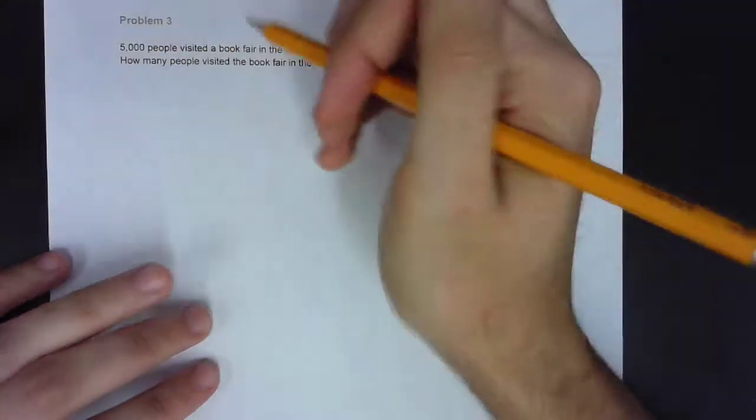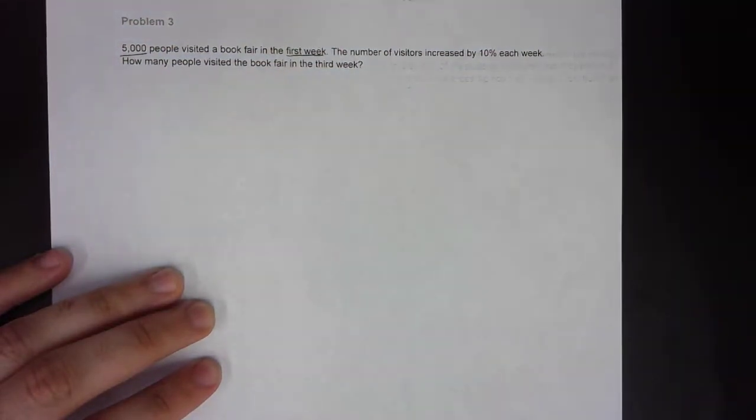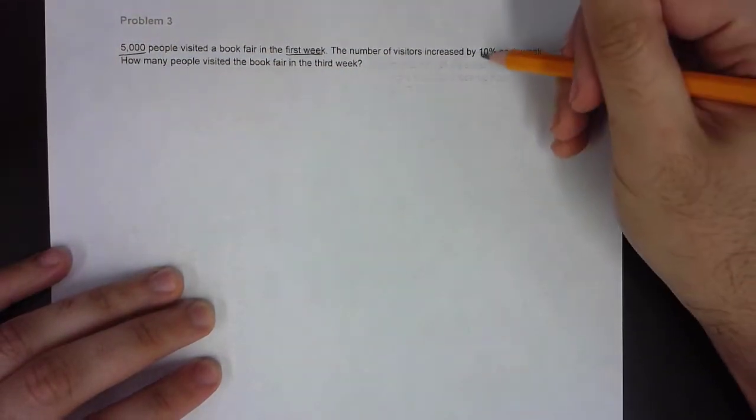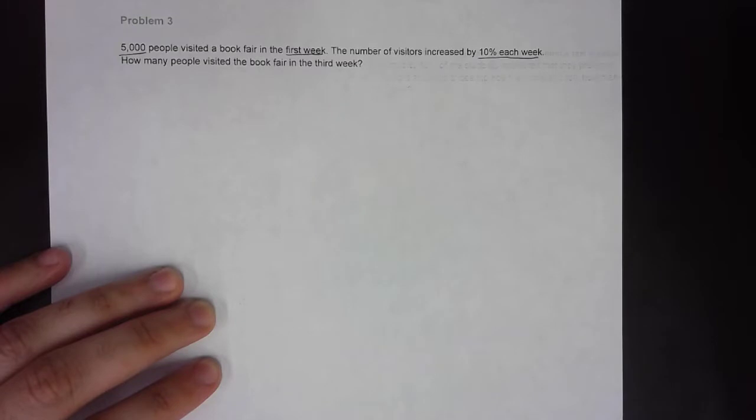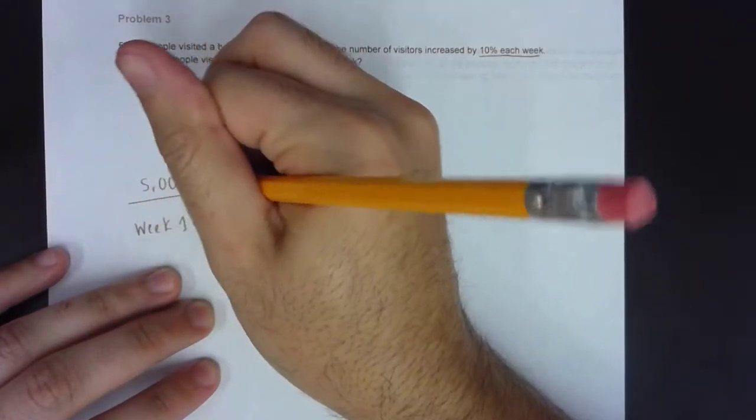5,000 people visited a book fair in the first week. So that's 5,000 people first week. The number of visitors increased by 10% each week. So if we start off in week one with 5,000 visitors,